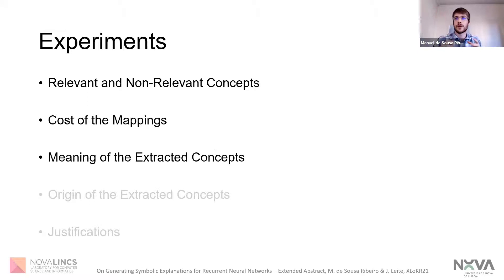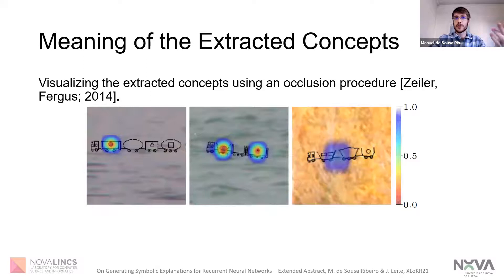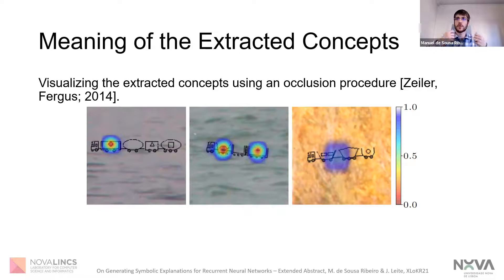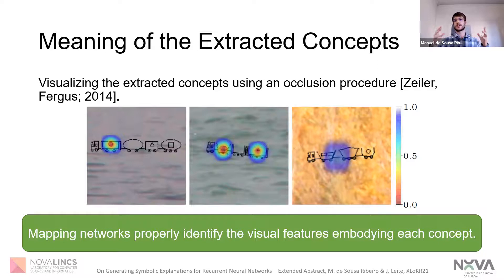We then wondered about the meaning of the concepts being extracted by our mapping networks — whether they are finding meaningless correlations in the activations, or whether they are really perceiving these concepts as we perceive them. To investigate this, we used an occlusion procedure to visualize where on a given image our mapping networks are responding when it is occluded. For example, looking at the first image in the slide, we can see a mapping network trained to identify wagons with circles on their insides. When the first wagon, which has a circle on its inside, is occluded, there is a sudden drop in the output of this mapping network. Through visual inspection of many different inputs to many different mapping networks, we could confirm that mapping networks seem to be properly identifying the visual features that embody each of the concepts they are extracting.